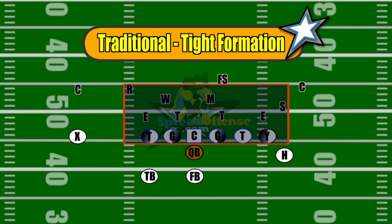I'd also like to go over the recognition on the defensive side of the ball. What we're seeing here against this traditional offense is a 4-3 cover-2 defense. We have our four defensive linemen — two defensive ends and two defensive tackles. We have our three linebackers: the Mike, which is your middle backer; the Will, your weak side backer; and the Sam, your strong side backer. In the secondary, we have four players — two corners, our free safety in the middle of the field, and our rover, who can act as a strong safety and drop into the box as a fourth linebacker.